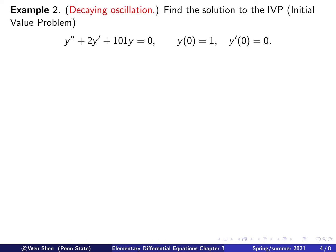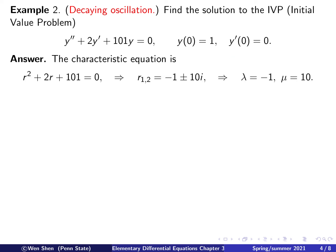Our next example involves a problem where the amplitude of the oscillation will change. The problem is y double prime plus 2y prime plus 801y equals 0, with initial conditions y(0) = 1 and y'(0) = 0. Setting up the characteristic equation and solving, we find the two roots are −1 ± 10i — a complex conjugate pair.